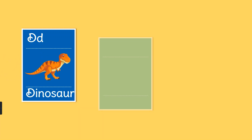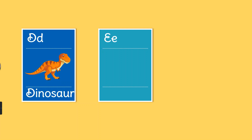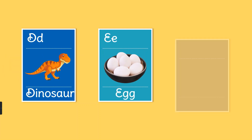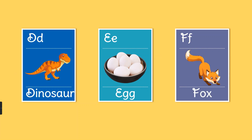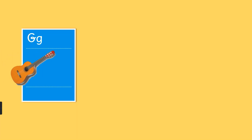D. D for dinosaur. E. E for egg. F. F for fox. G. G for guitar.